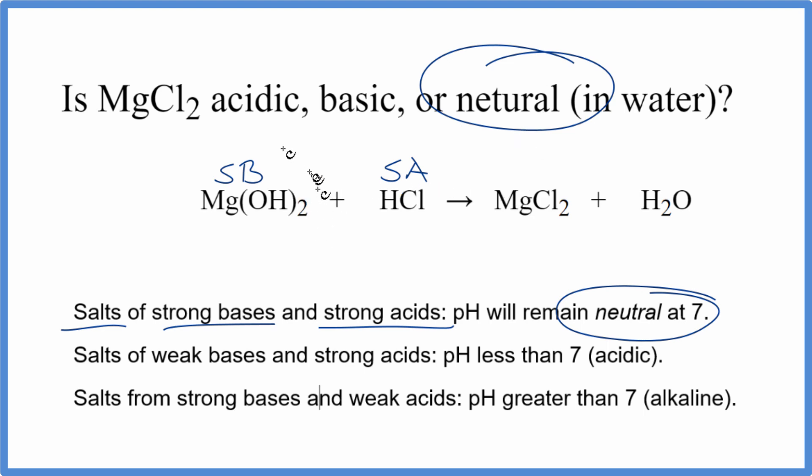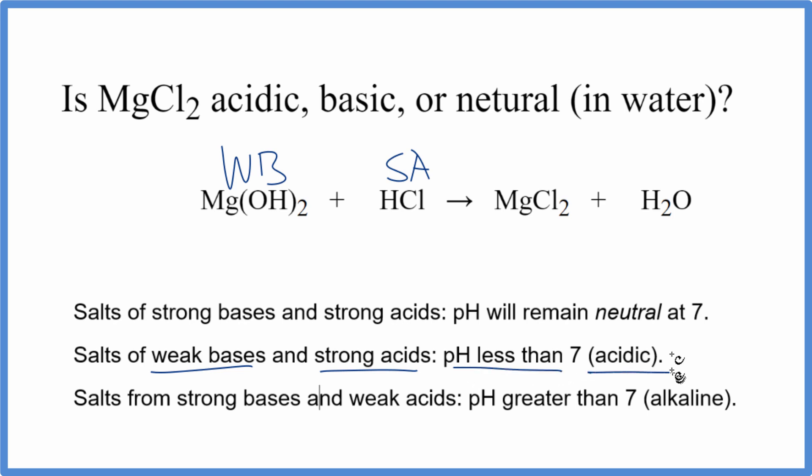Let's take a look at what happens if we consider this a weak base. So let me clean this up. So if we say this is a weak base here, and that this is a strong acid, so we have a weak base and a strong acid. When those react in a neutralization reaction, we would get a pH less than 7, and it would be acidic.